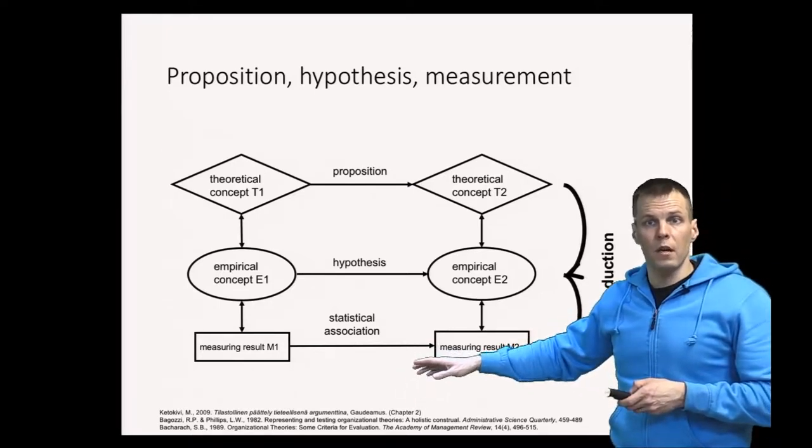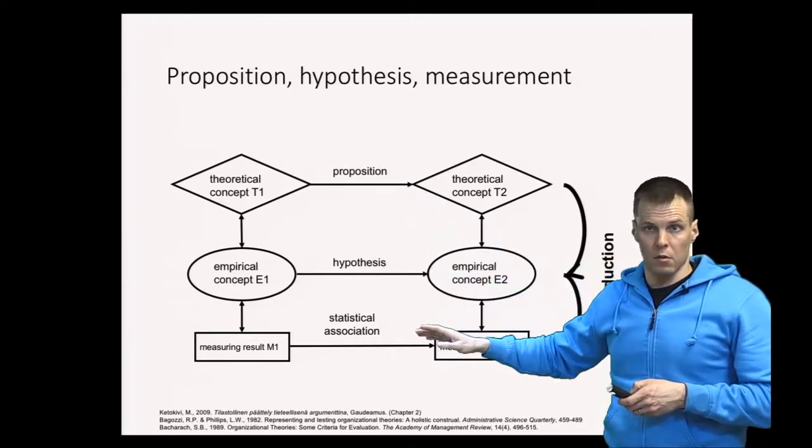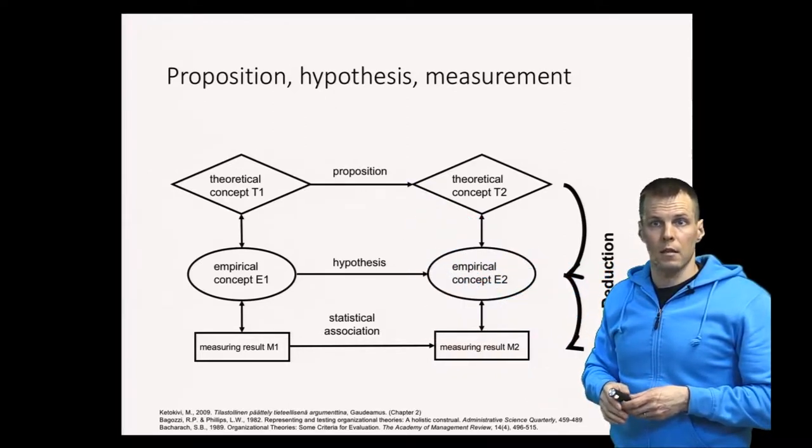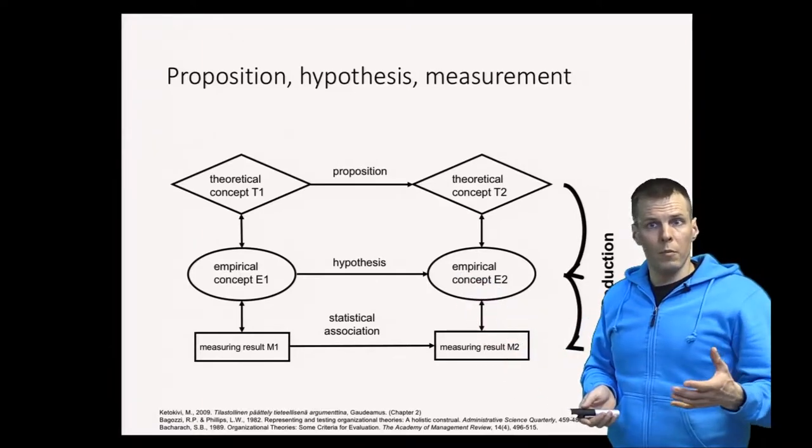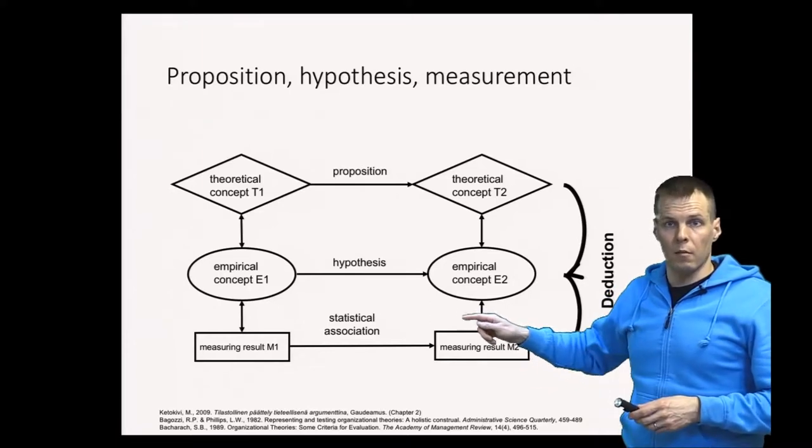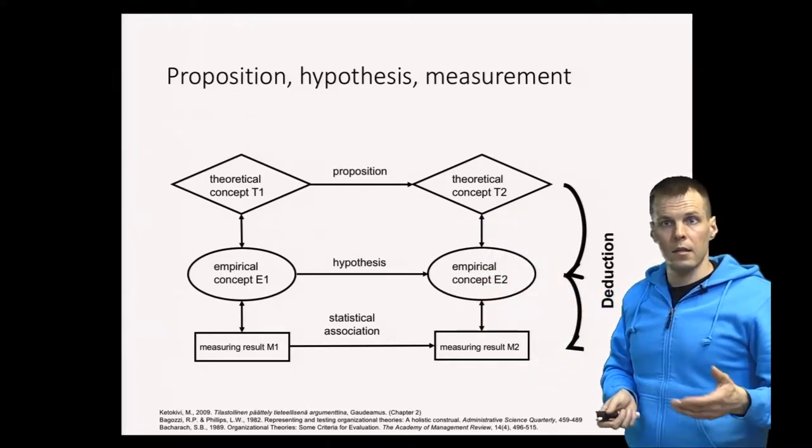Our focus thus far has been on the proposition, hypothesis, and statistical association, and we haven't really discussed much about these arrows here. So now we're going to be looking at specifically what these two arrows mean, and let's go back to our example.